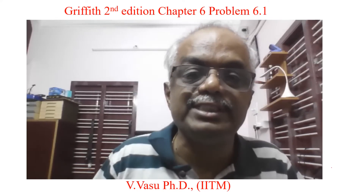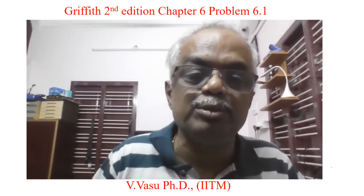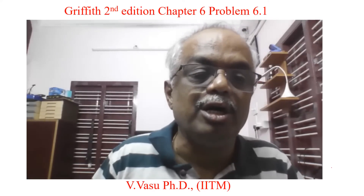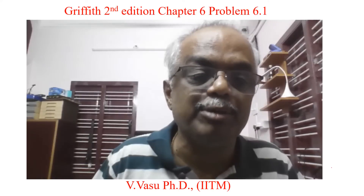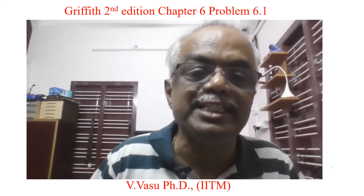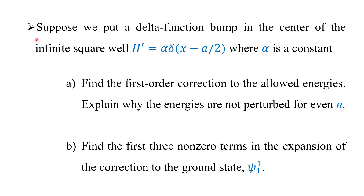Today we will see the solution to Problem 6.1 of Griffiths' Introduction to Quantum Mechanics, second edition. The problem is: suppose we put a delta function pump in the center of the infinite square well. The perturbation Hamiltonian H' is equal to alpha times delta(x minus a/2), where alpha is a constant and a is the width of the potential well.